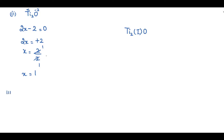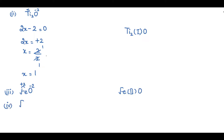The third compound is FeO. There is only one atom of iron and one atom of oxygen. The oxidation state of oxygen is minus 2, and since this is a neutral compound, the oxidation state of iron will be plus 2. In stock notation, this is written as Fe(II)O.